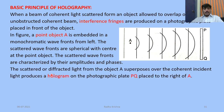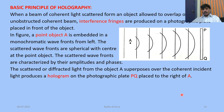The scattered or diffracted light from object A superimposes on the coherent incident beam and produces a hologram on the photographic plate PQ, placed to the right of the object A.